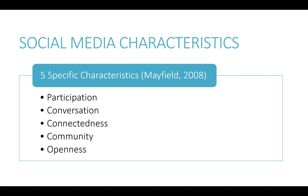There are five specific characteristics of social media: participation, conversation, connectedness, community, and openness. Participation encourages contribution and feedback from everyone who is interested. Conversation reflects that social media is better seen as a two-way conversation rather than something that can be transmitted or distributed to an audience. Connectedness is a characteristic of social media that permits users to operate a platform of interconnectedness, realized primarily via the provision of links to a wide variety of sites, persons, and resources, enabling the formation of close relationships between people.